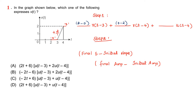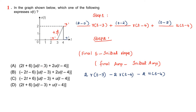And for the unit step signal, the initial amplitude is 2 and the final is 0. So the equation is 2 R of t minus 3 minus 2 R of t minus 4 minus 2 U of t minus 4. The answers are given in terms of unit step signal. Next, I am going to find out the relation between unit step and unit ramp.